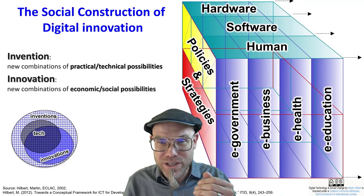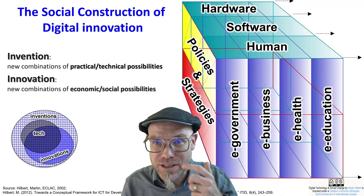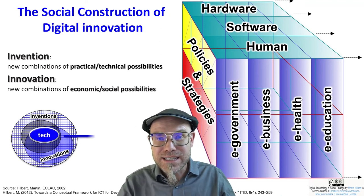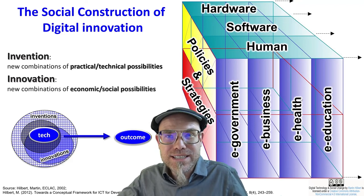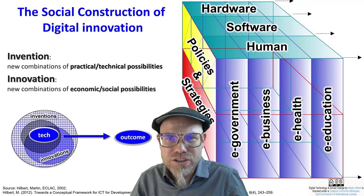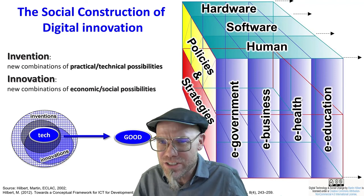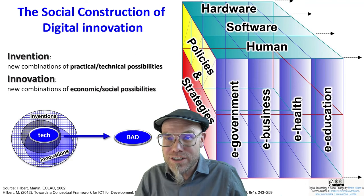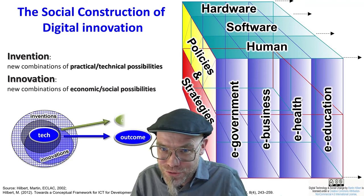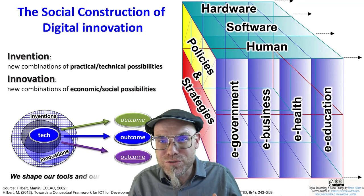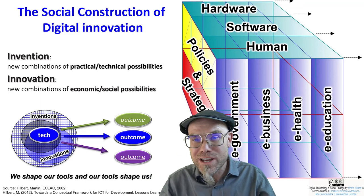What has been missing from this entire specialization and all these lectures is this third side: that technology, and especially the social adoption of technology, needs to be guided. We have three dimensions: technology, society, and its social construction. Technology is not technologically deterministic — the technology itself doesn't determine the outcome. Technology is not inherently good or inherently bad. ChatGPT is not inherently bad. No technology is good nor bad — nor is it neutral — because we shape our tools, and our tools shape us. But it has to be socially constructed.